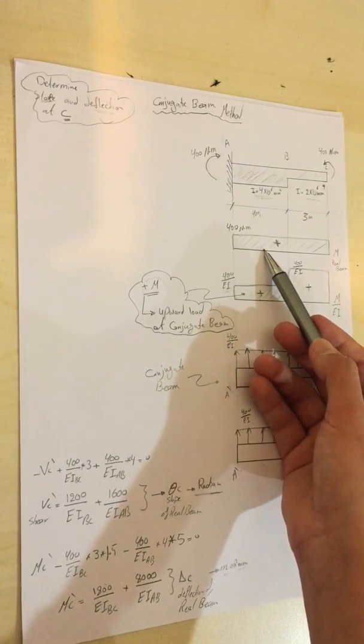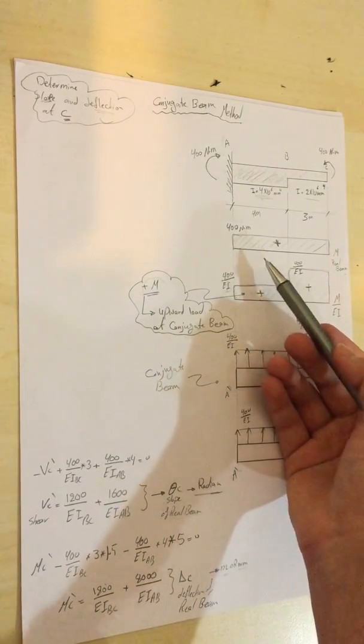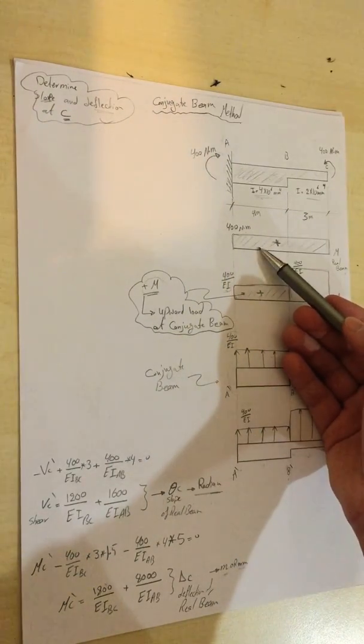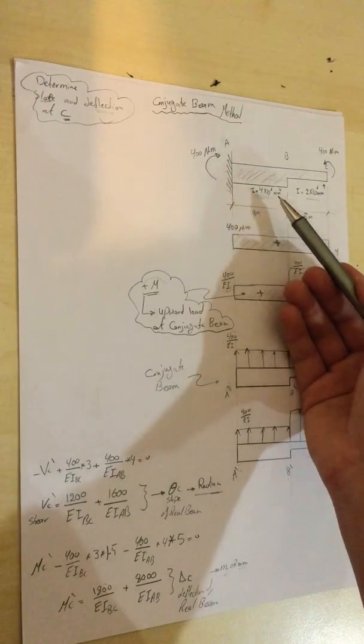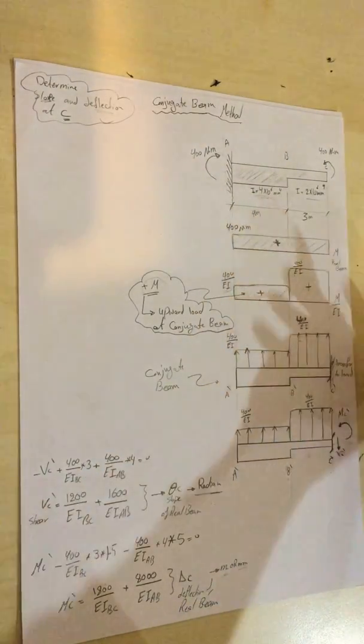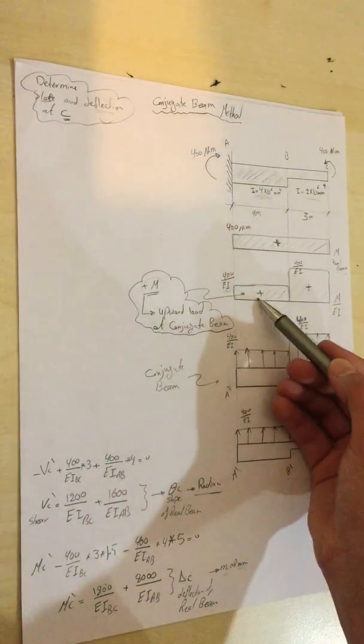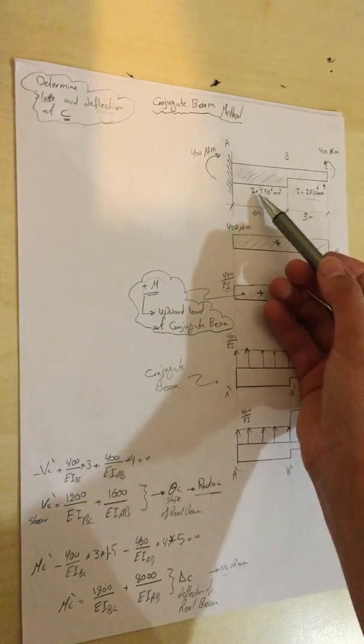I will change this moment diagram into a loading equivalent depending on the moment of inertia. For this segment it will be smaller than this one because the moment of inertia here is large, which means it has more resistance to moment.